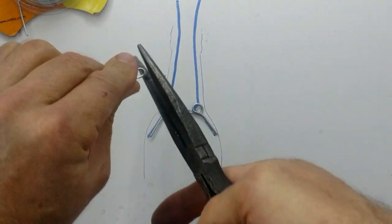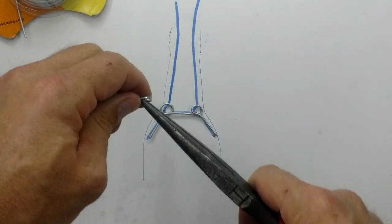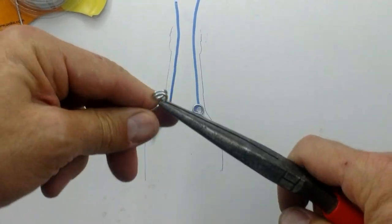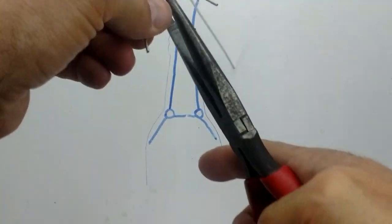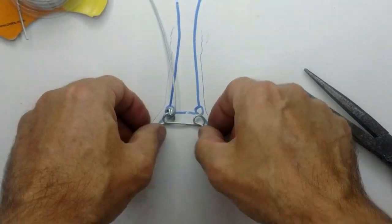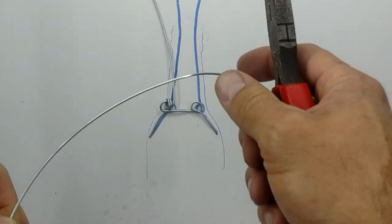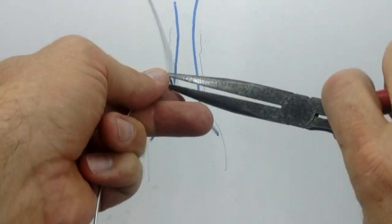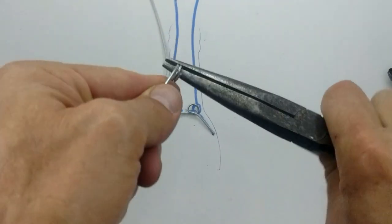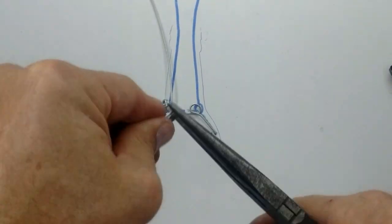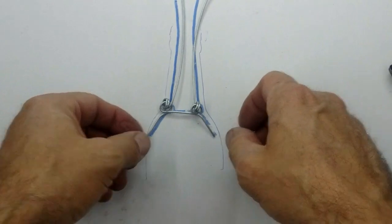I bend a loop in the end of another wire and attach it to one of the loops of the support wire. I cut another piece of wire and attach it to the other loop.